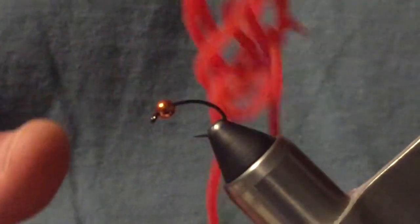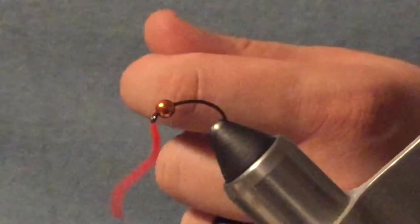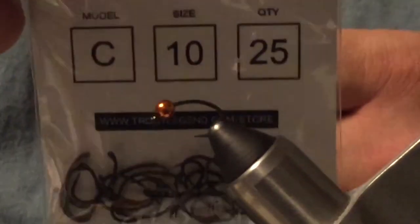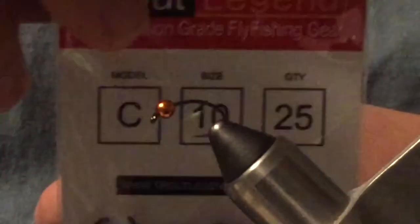The color I'll be using today is kind of a fire orange. You can see it here. In the vise I have trout legend C jack caddis marbles hook size 10. Great sticky hook, really holds fish well.